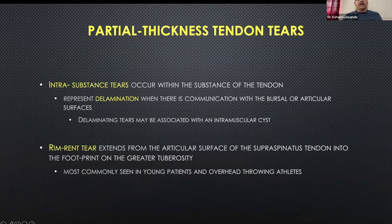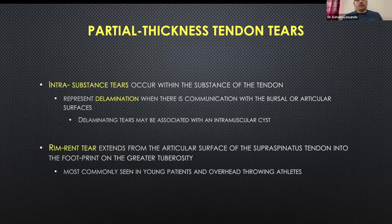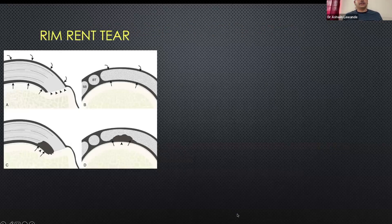Delaminating tears are interstitial tears which extend to the bursal or articular surfaces and sometimes form an intramuscular cyst. Rembrand tears are those which extend from the articular surface of the supraspinatus tendon into the footprint, and these are commonly seen in young patients and overhead throwing athletes.